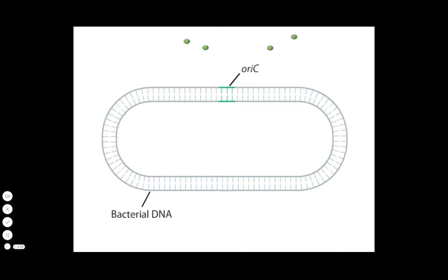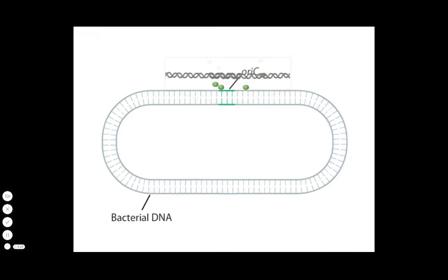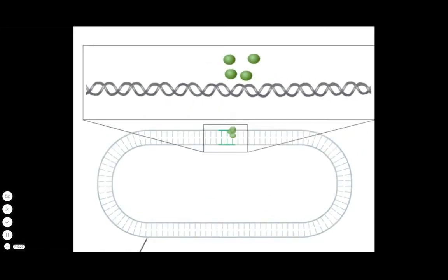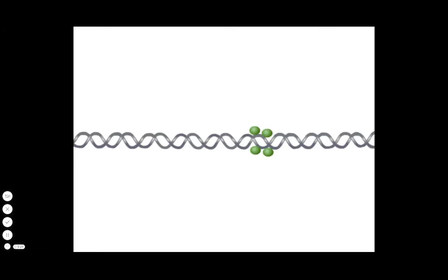A protein called DNA-A increases in concentration as a cell grows and gets ready for cell division. This protein as a complex with ATP controls the onset of initiation by binding to specific 9 base pair repeats at OREC.